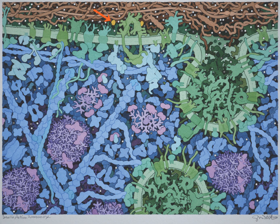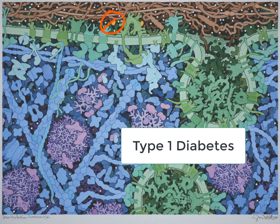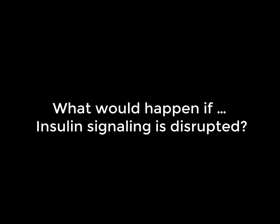Since insulin is critical for beginning the process of glucose uptake, if insulin is missing, the entire process of glucose uptake stops. The glucose remains outside the cell and the cells are unable to utilize it. This is in fact what happens in type 1 diabetes, and the only way to treat it is to provide insulin by injection.